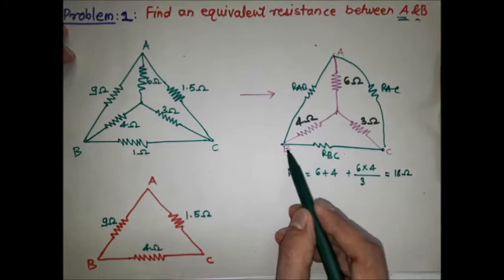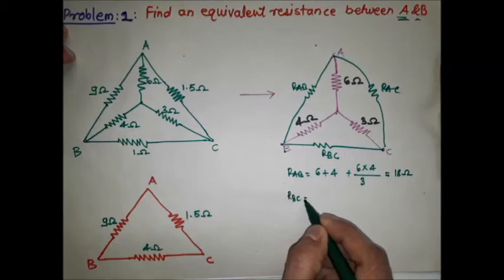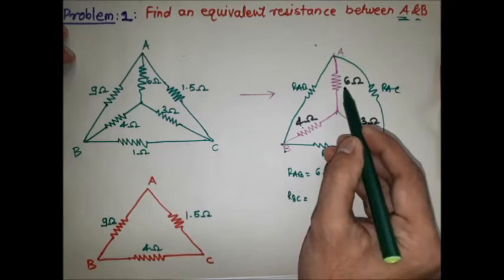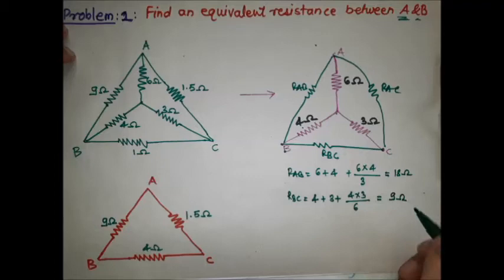For RBC: the resistances connected to B and C in the star network are 4 ohm and 3 ohm. So RBC = 4 + 3 + (4 × 3) / 6 = 9 ohm.